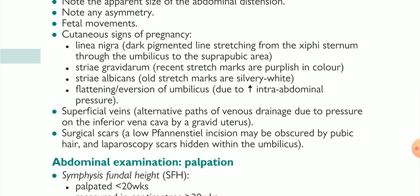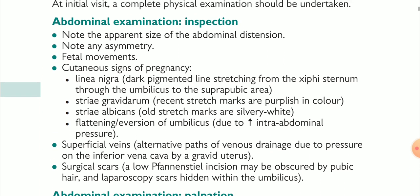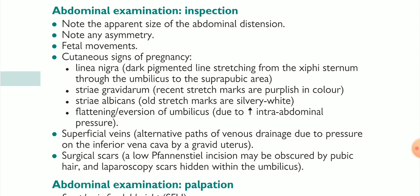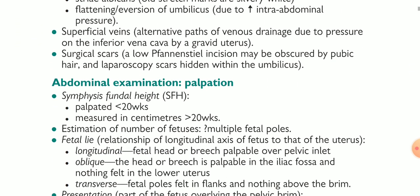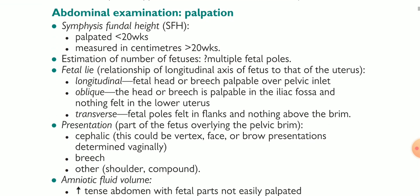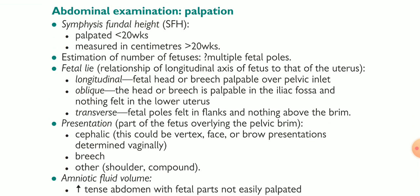Number three is surgical marks — we have to check and take into consideration any surgical scars. Low transverse incisions may be observed near the pubic hair, and laparoscopy scars hidden within the umbilicus. These are the normal signs which help in inspection of the pregnant lady.